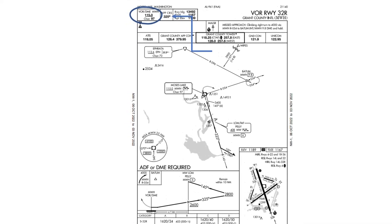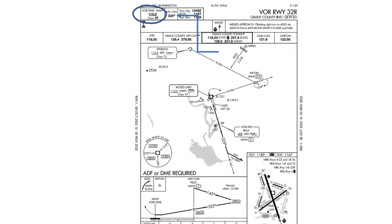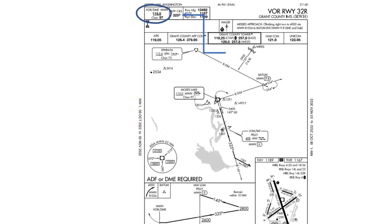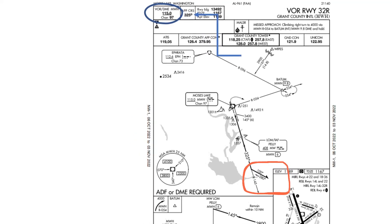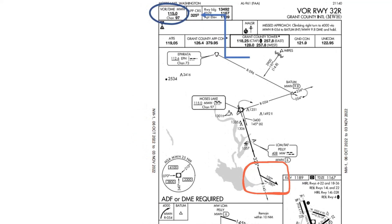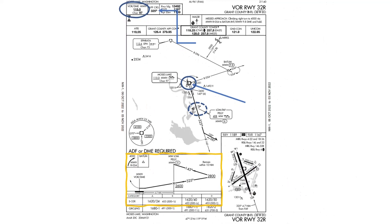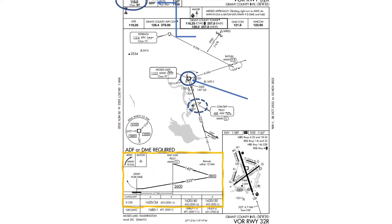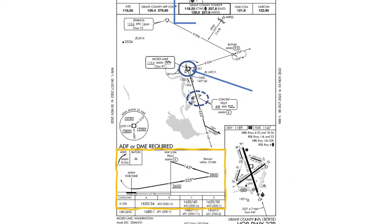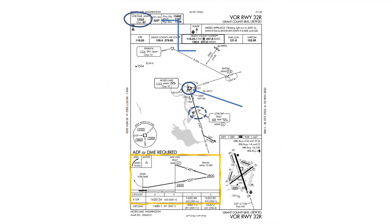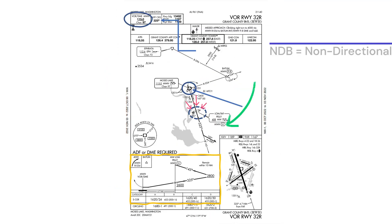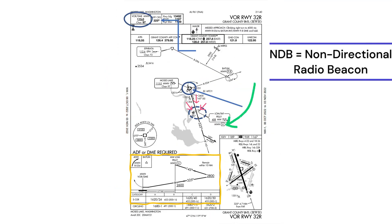To fly this VOR approach, we would intercept the 145 radial on a heading of 280. Notice the profile view in the bottom of the chart. The Peli NDB is the locator outer marker and the initial approach fix is 6 miles from the Moses Lake VOR.